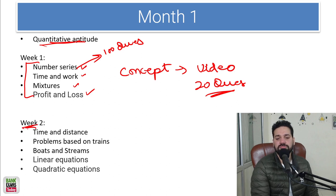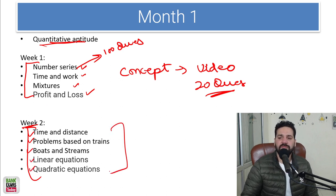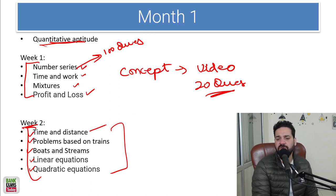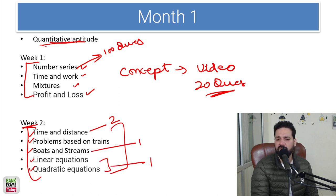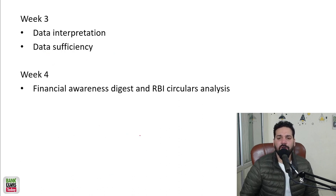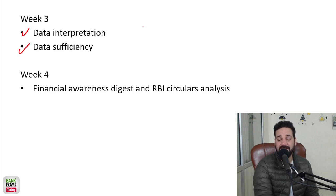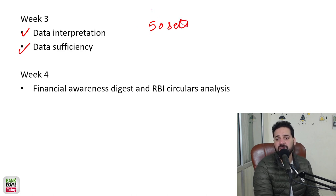In week 2, we cover time and distance, problems based on trains, boats and streams, linear equations, and quadratic equations. You need to watch the video followed by 20 questions. Time and distance may take 2 days; quadratic and linear equations can easily be done in one day; boats and streams one day; problems based on trains again about one day. In week 3, do data interpretation and data sufficiency — you should attempt at least 50 sets in the whole week, going through the concept video followed by practice.